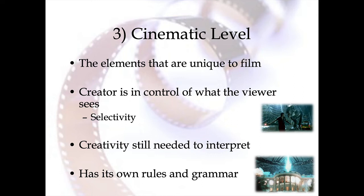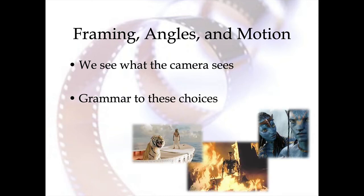The cinematic level also has its own rules and grammar, and as we learn those, we have more tools to help us interpret the films we're watching. Camera framing, angles, and motion — what the camera sees is what we see. You will learn the grammar of these choices: what do long shots mean, what do low camera angles mean, what does a Dutch angle mean? We have to identify them and then interpret them and connect them to our interaction with the text.